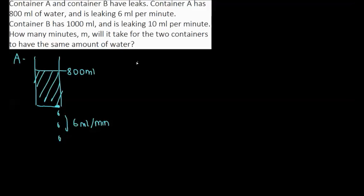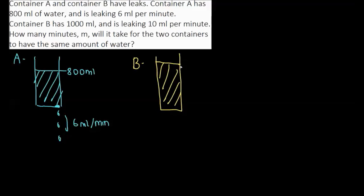We are going to identify Container B. Container B has 1000 mL, so another container with 1000 mL. It is leaking 10 mL per minute, so there is a hole leaking 10 mL per minute. The question asks for the minute when these two containers, continuously leaking, will have the same amount of water.